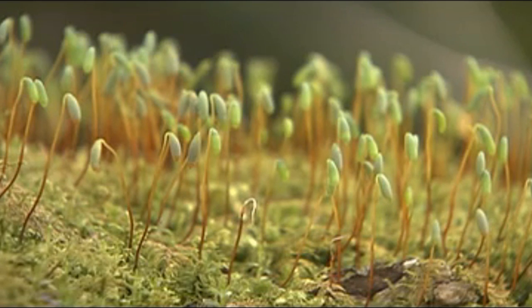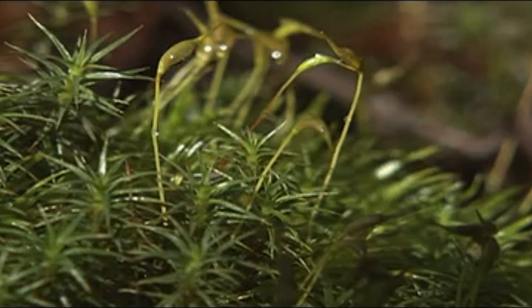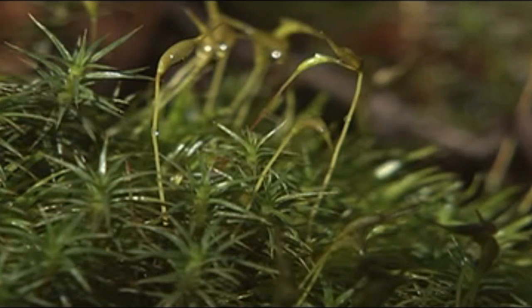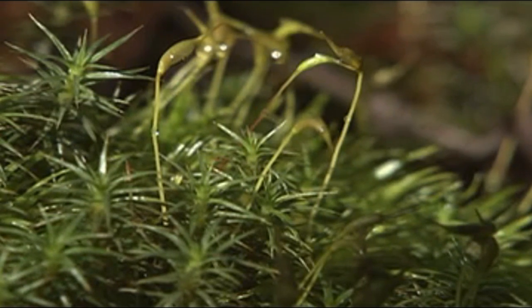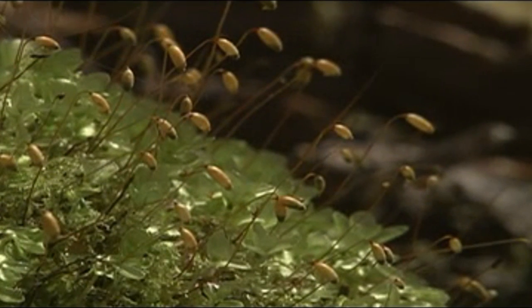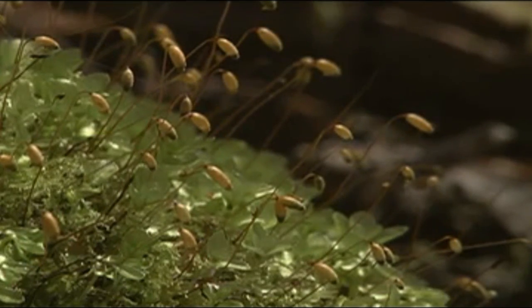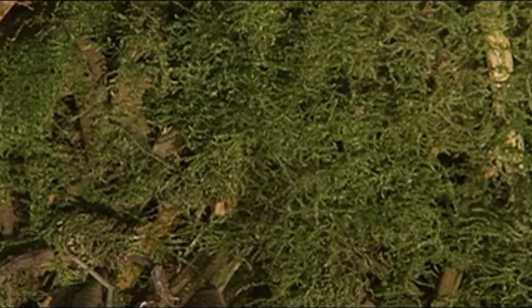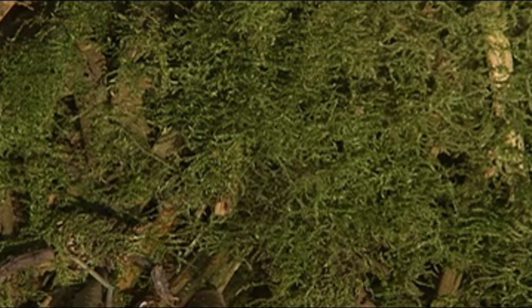In mosses, it develops into a long-stalked diploid sporophyte that rises directly out of the archegonia. The sporophyte is topped by a capsule in which haploid spores are produced by meiosis. The capsule eventually breaks open and the haploid spores are dispersed by wind and eventually germinate if they land in a suitable environment, producing a tangled moss of green filaments called a protonema.